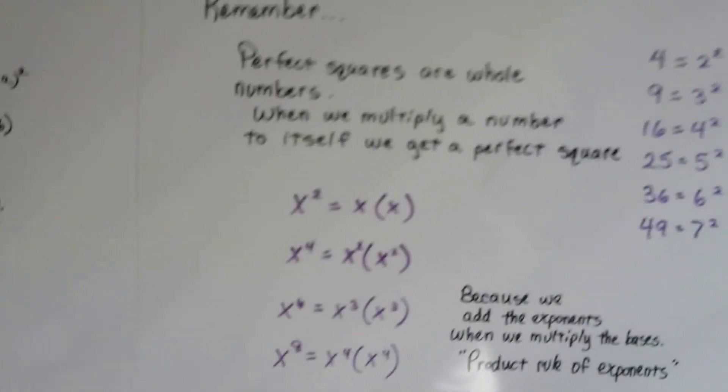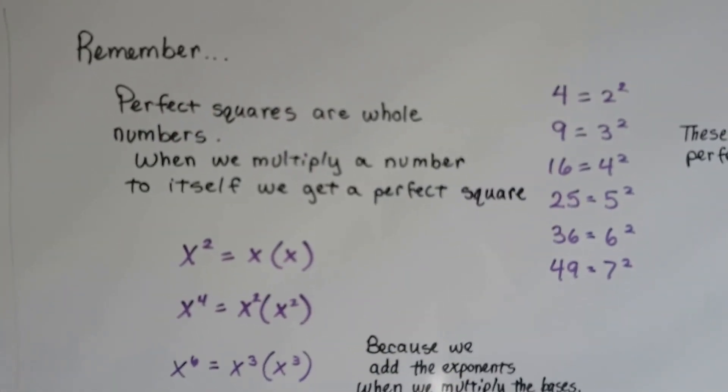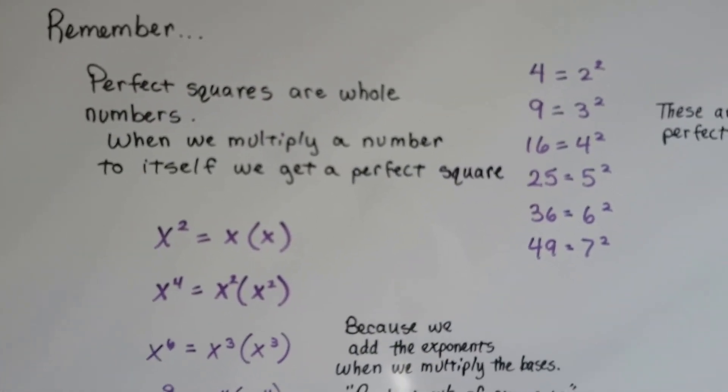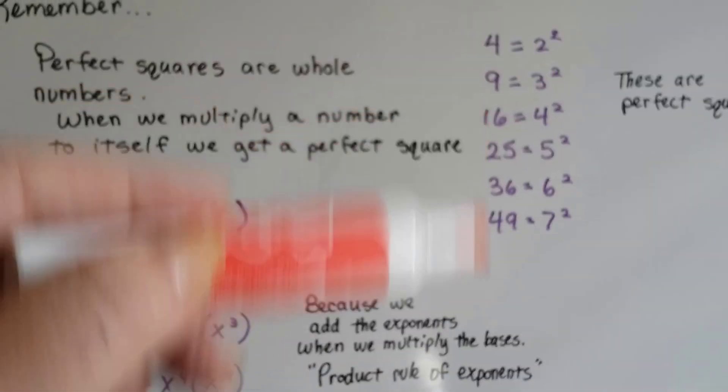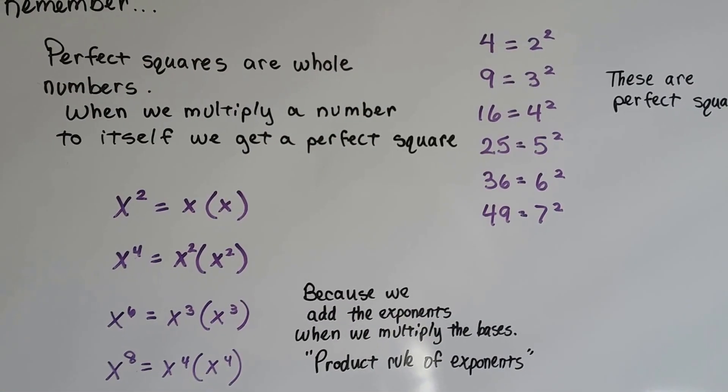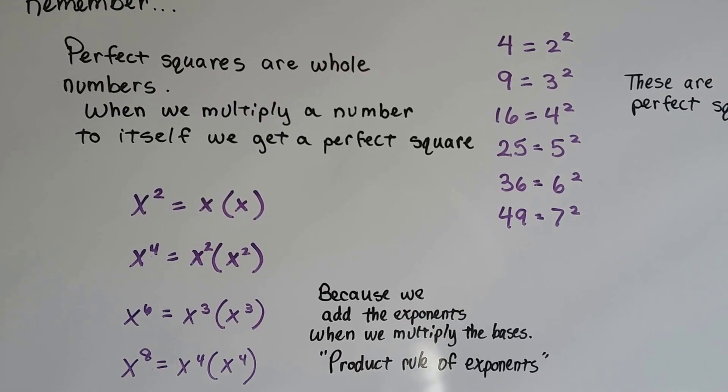So just remember from grade school, perfect squares are whole numbers. And when we multiply a number to itself, we get a perfect square. So these are all perfect squares. 8 times 8 is 64. 9 times 9 is 81, and it goes on and on.